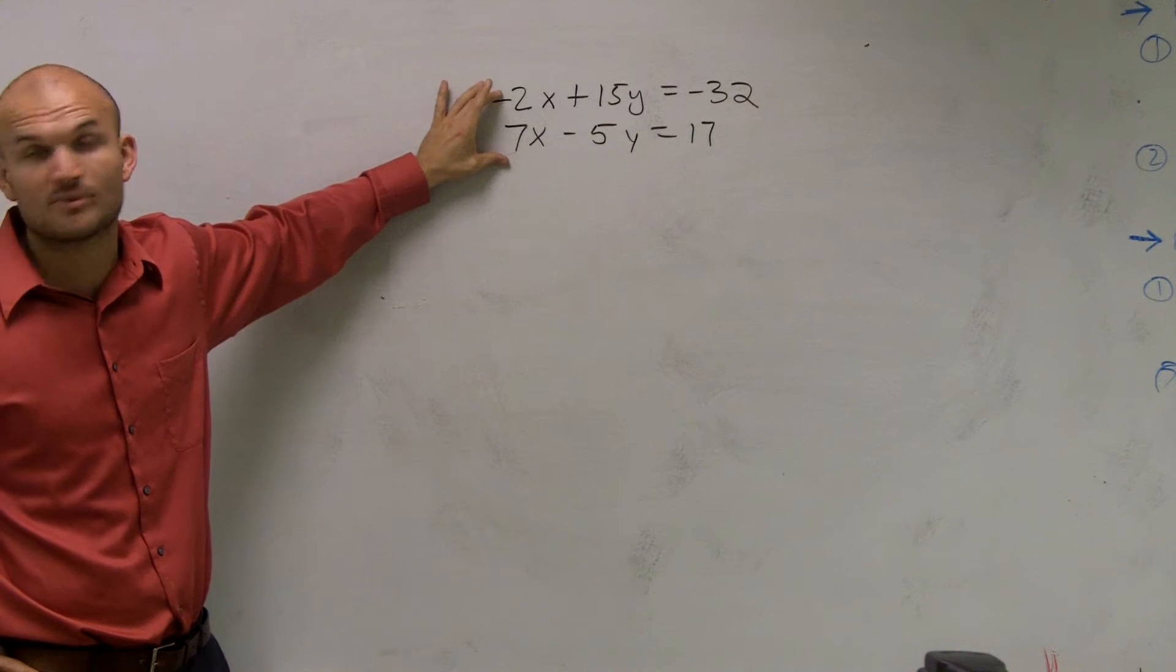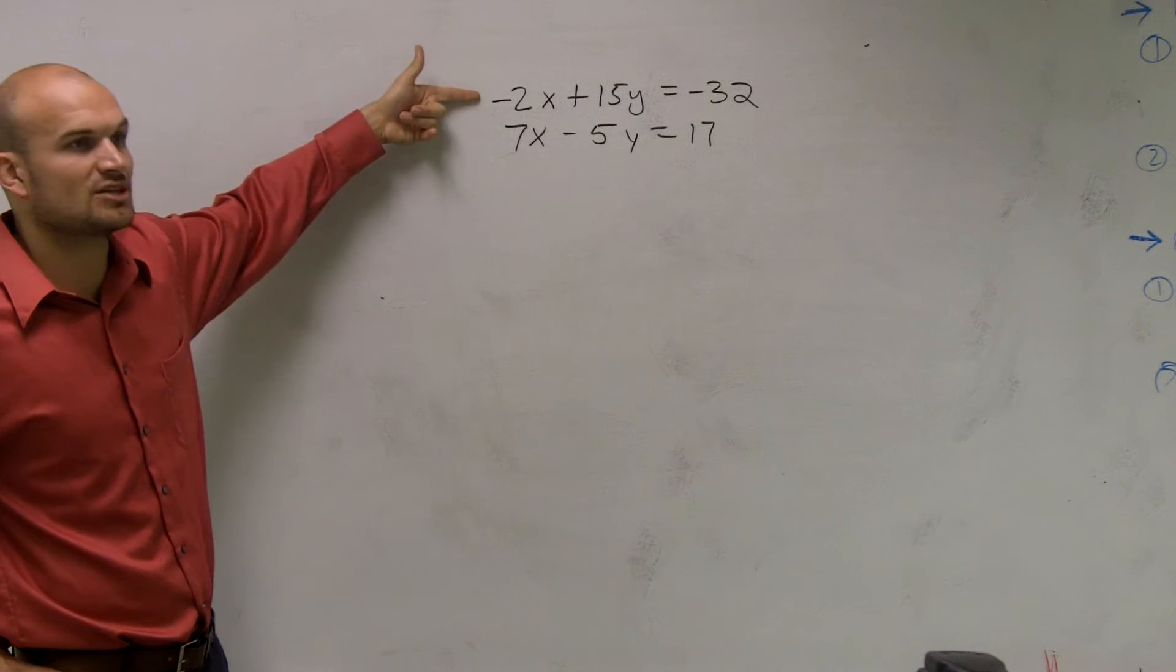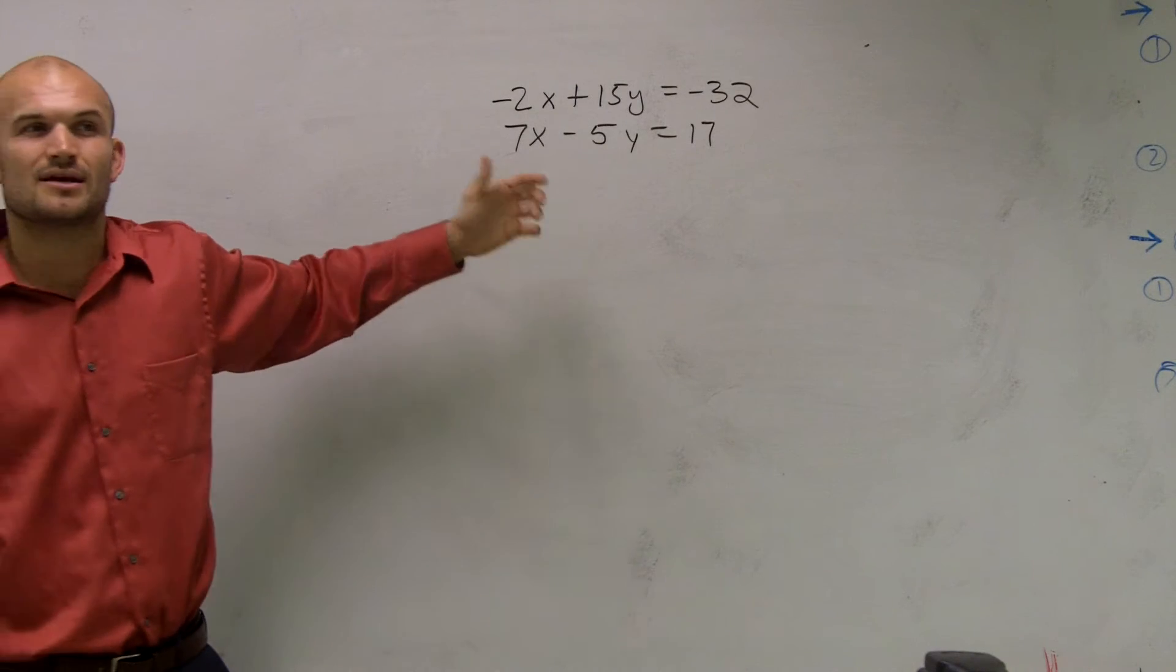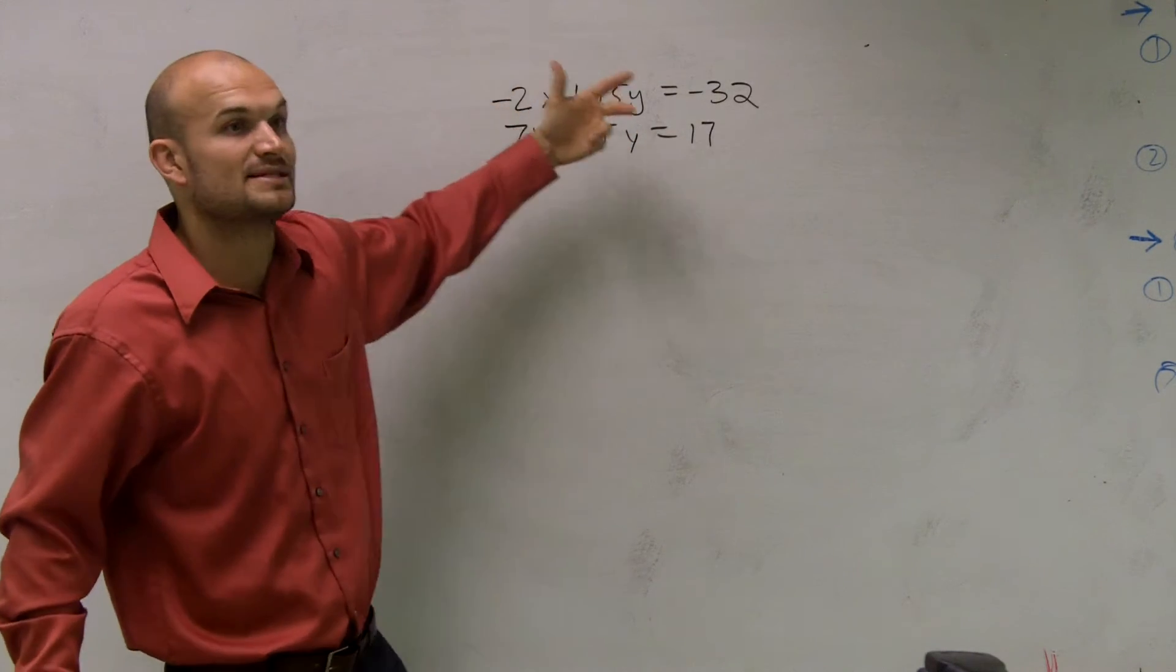The smallest number that those two numbers both go into. Meaning, to get them both to be 14, I'd have to multiply this by 7 and this by 2, which is a lot of work. We could do it, but let's see if there's an easier way to get our 15 and 5 to be the same number.